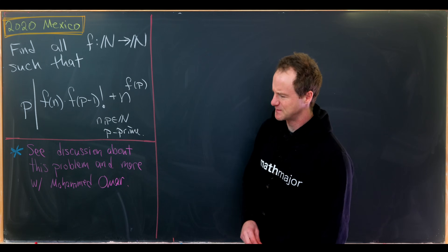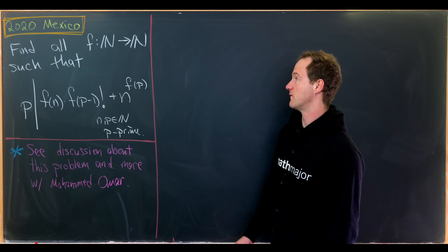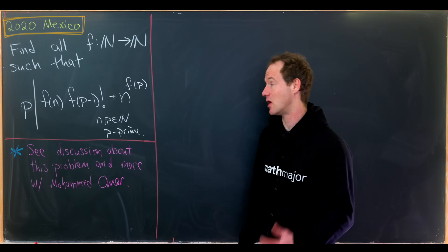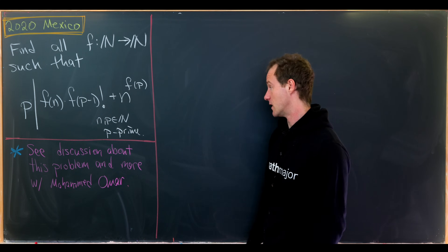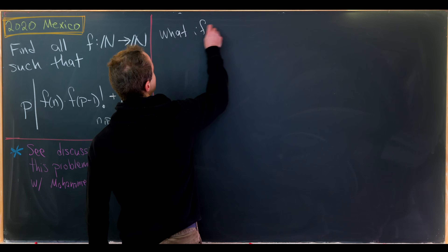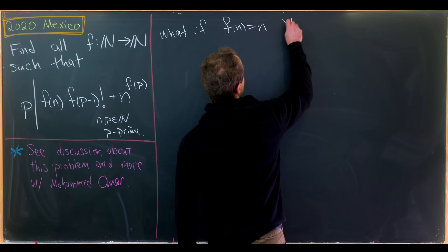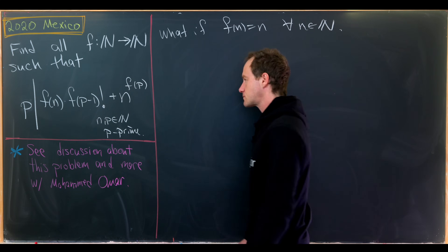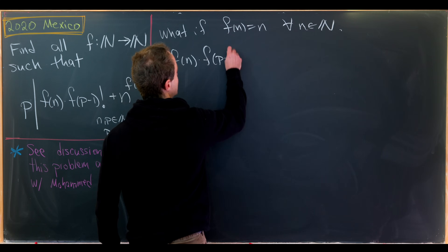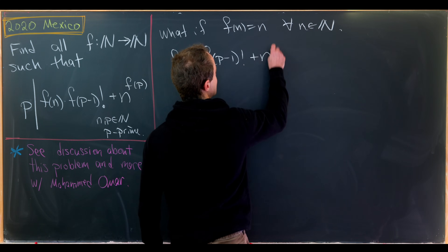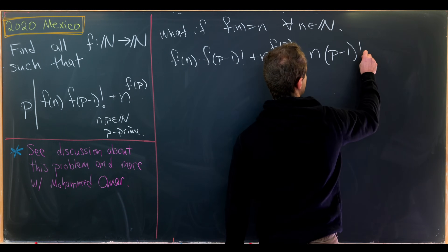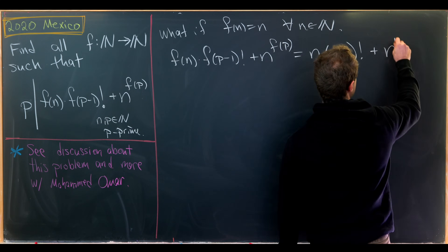The standard rule for functional equations is that the identity function is a pretty common solution. And in fact it is in this case as well. So let's check that. What if f(n) = n for all natural numbers n? Let's look at this expression: f(n)·f(p-1)! + n^f(p) collapses to n·(p-1)! + n^p.